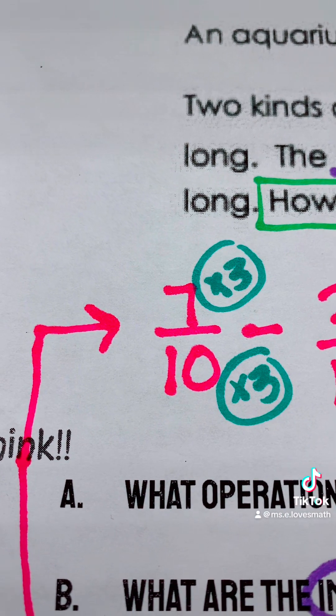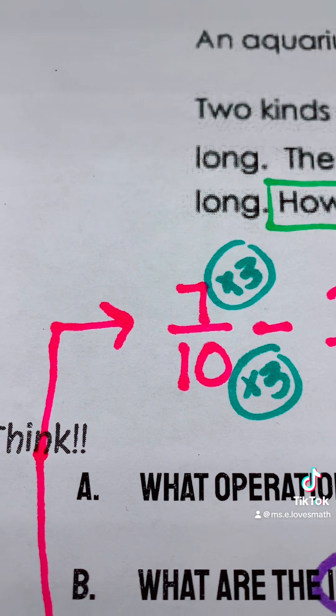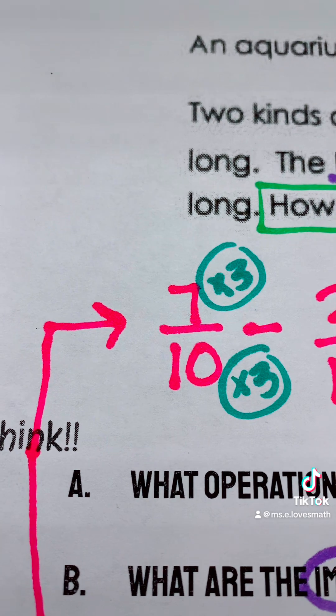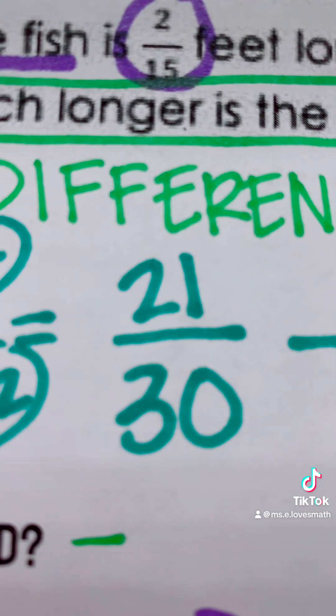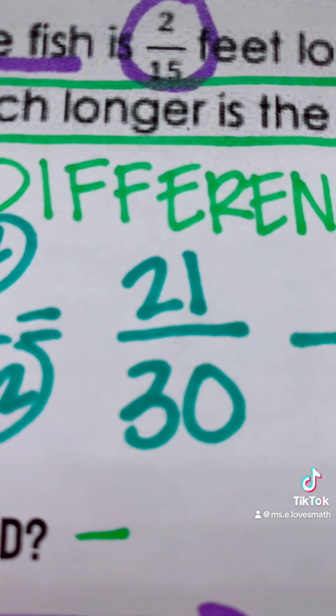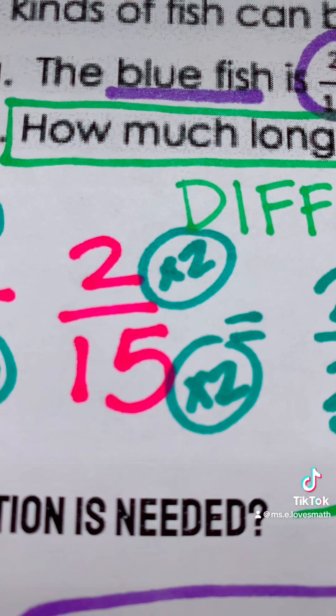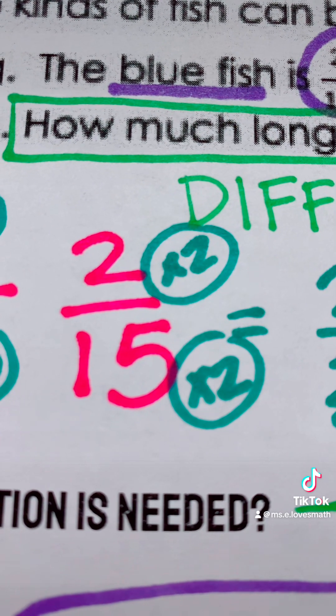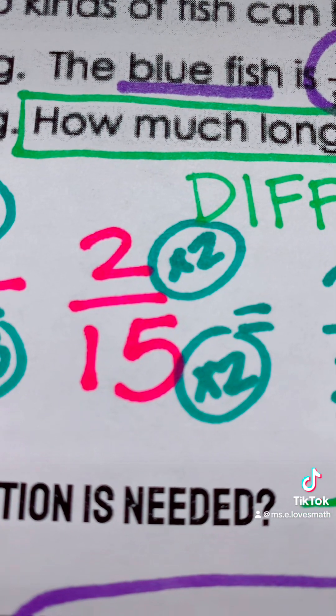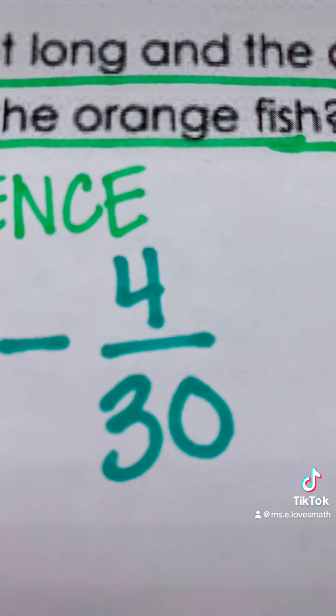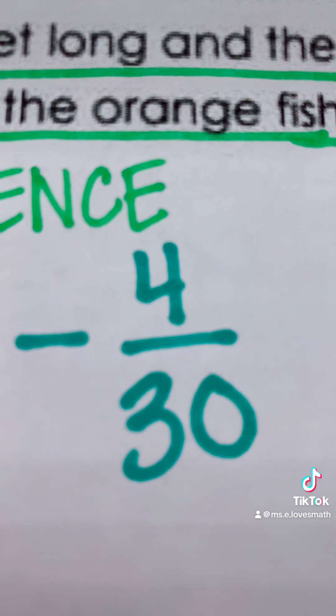10 times 3 is 30. Whatever you do to the bottom, you must do to the top. So 7 times 3 is 21. So our new fraction is 21 over 30. 15 times 2 is 30, therefore 2 times 2 is 4, because whatever you do to the bottom, you must do to the top. Our new fraction is 4 over 30.